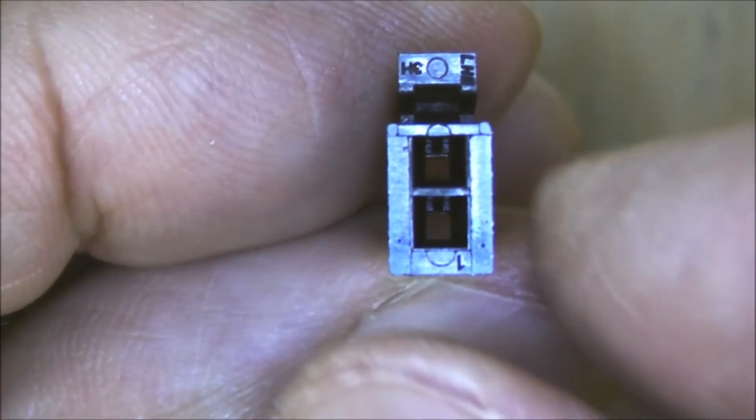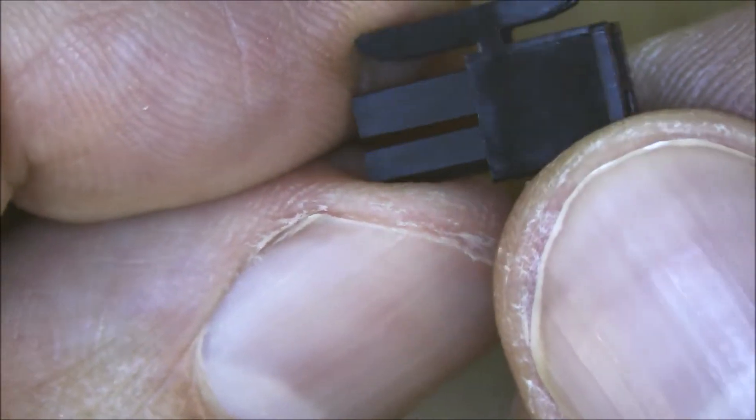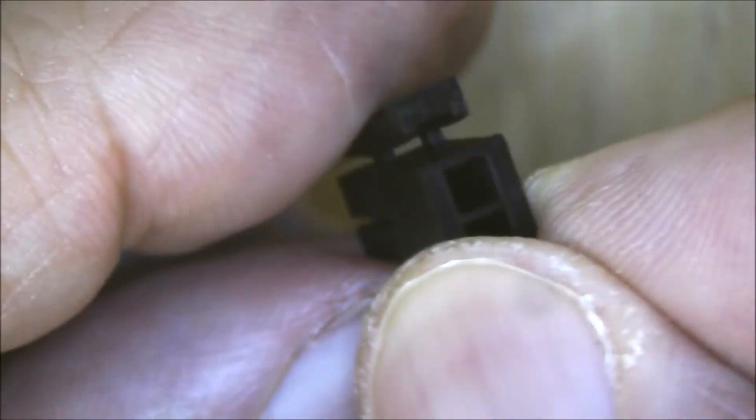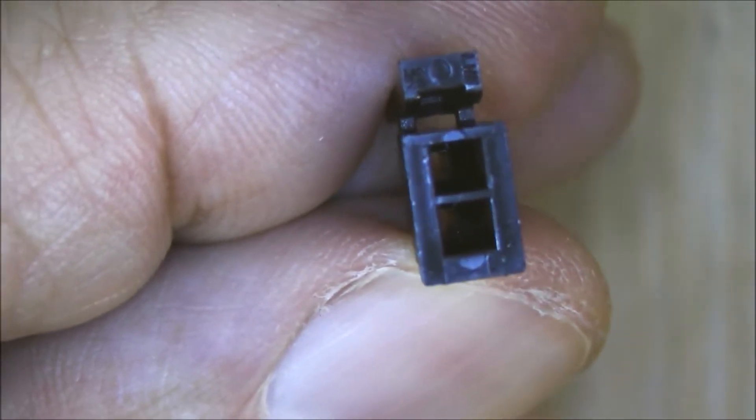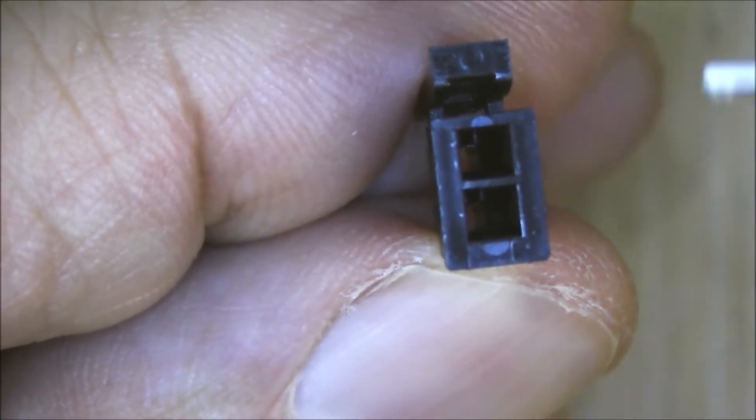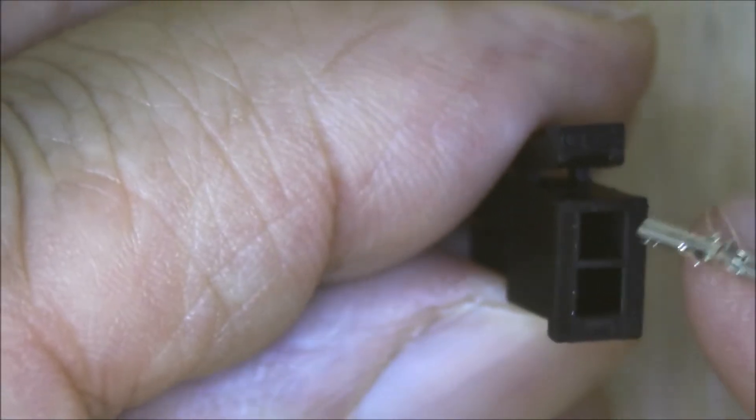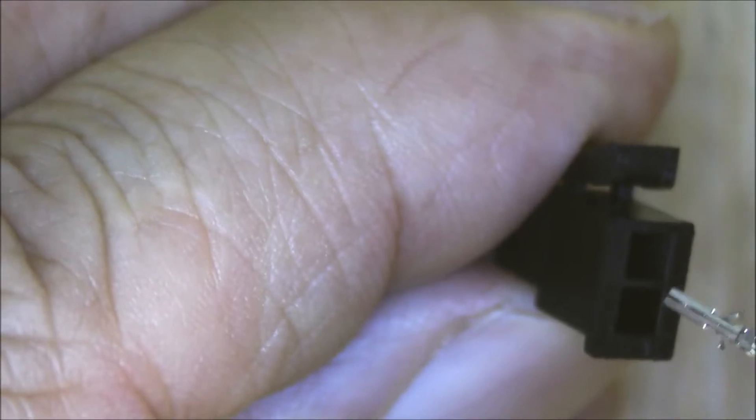Next up I'm just going to show insertion of the pins into a typical housing, one of the many types of housings available for this line of connectors. This particular housing only has one latching lever on top, where some of them have a latching lever on both sides.